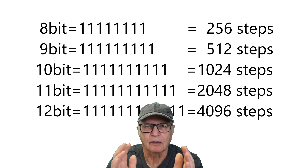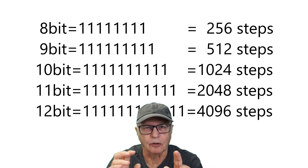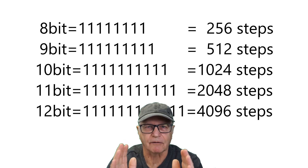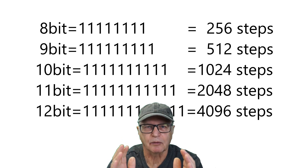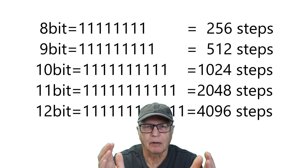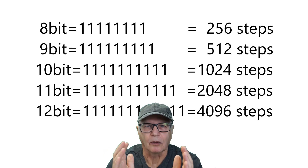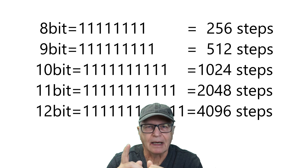Binary numbers come in different widths, and if all of the bits inside of the binary number are turned on and they are a 1, that is the maximum value of that binary number. The maximum value expressed by an 8-bit binary number is 256 — so it's actually 0 to 255, but there are 256 different numbers. Add a bit and it becomes a 9-bit number, with a maximum of 512. It just doubles every time you add a bit, until you reach 12 bits, where the decimal value is 4096. I've added the word 'steps' — we'll get to that soon.